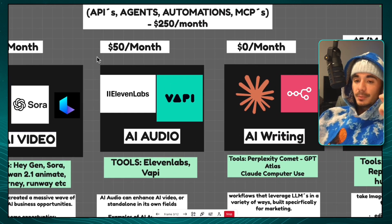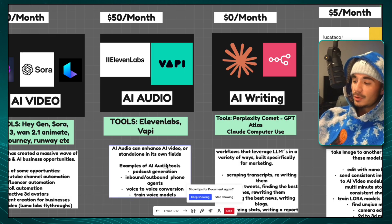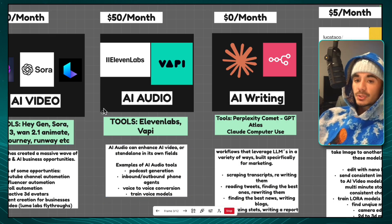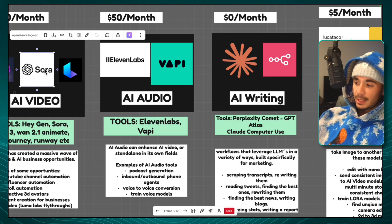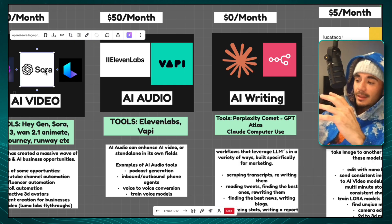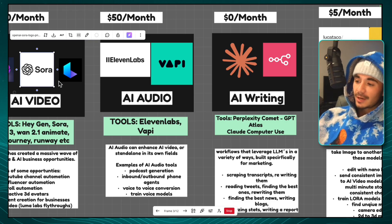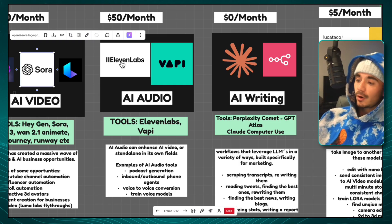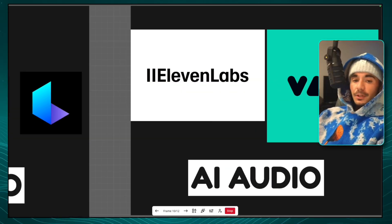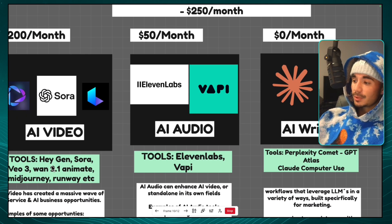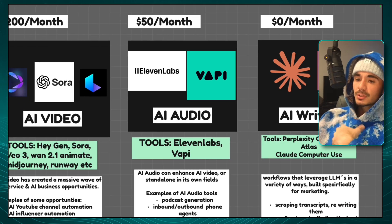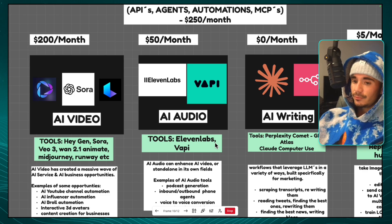For AI audio, you can enhance phone calls and outbound calls, but you can also replace any voice with your own. If you created a Sora video of you in Brazil and that version of you was talking, it won't sound like you. But if you send that video to ElevenLabs and do a voice-to-voice swap, you suddenly have B-roll video that also sounds like you. For phone calls specifically, I recommend Vapi — it's the simplest to work with when building phone agents for clients or YouTube tutorials.